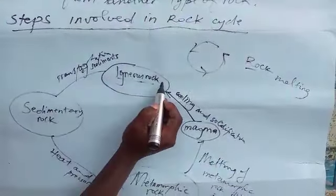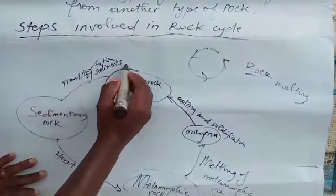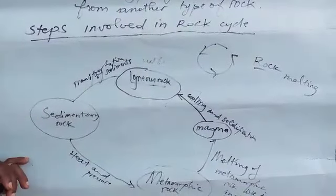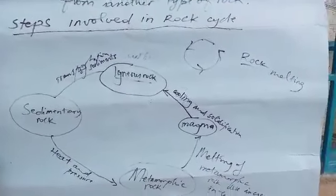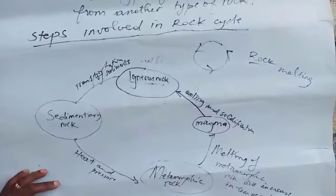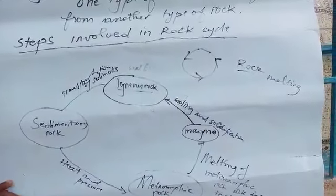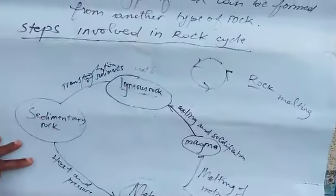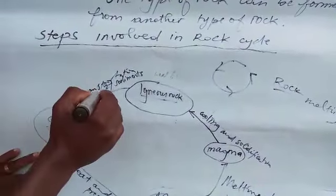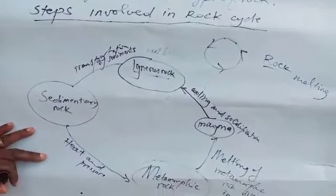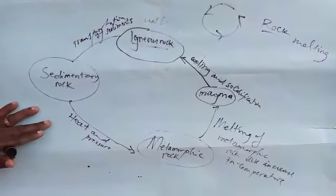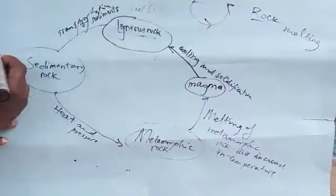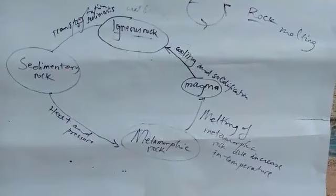When this igneous rock is attacked by weathering, there will be formation of rock sediments. Those sediments will be transported by the agent of erosion and will be deposited in the lowland area. After a long period of time, they will be compacted and cemented to form a sedimentary rock. That is how sedimentary rock is formed.